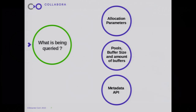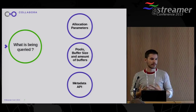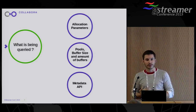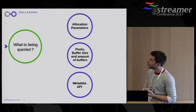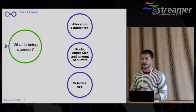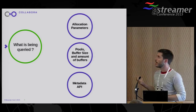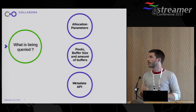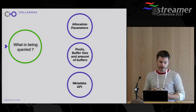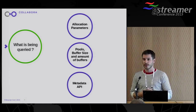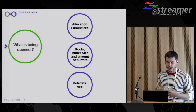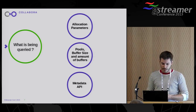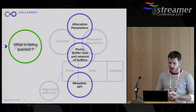The allocation query itself is mostly a mini object. It contains a structure, and in that structure we store three arrays: an array of allocators and allocation parameters, an array of pools that contains buffer size, the number of buffers, minimum, maximum, and all that information — and also the metadata, which we'll describe later.